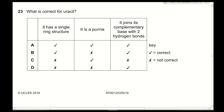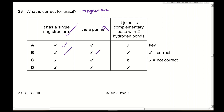Question 23: What is correct for uracil? Uracil is a single-ring structure — correct, because uracil is a pyrimidine found in mRNA and tRNA molecules. It is a purine — incorrect; it is a pyrimidine. Uracil joins its complementary base adenine with two hydrogen bonds — correct. Therefore the answer is B.